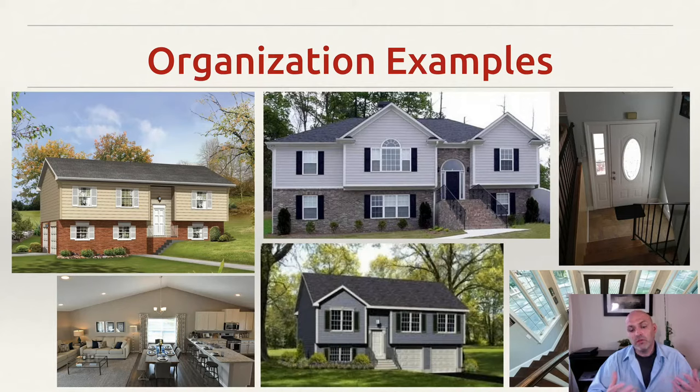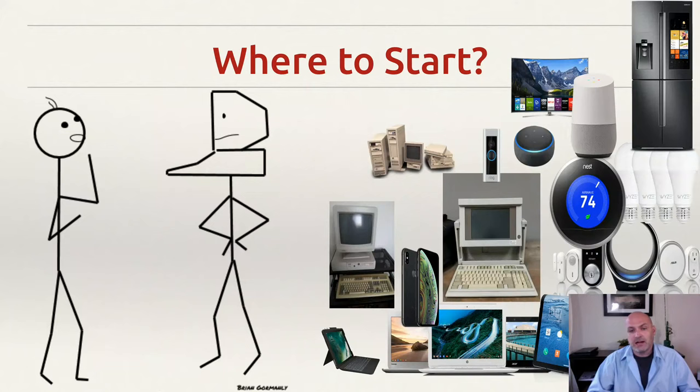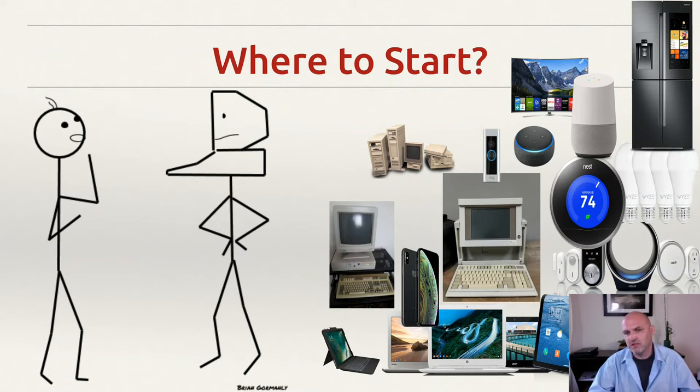So when we think about computers, we're going to be able to use these terms in the same way. The architecture will be the general categorization, and the organization will be how we actually implement that specific architecture. You may recall that when we talked about computer systems, we said that all computer systems fit a model where they take in some input, provide some processing on that input, and produce an output. Along the way, they need storage or memory in order to work with the information they're processing.